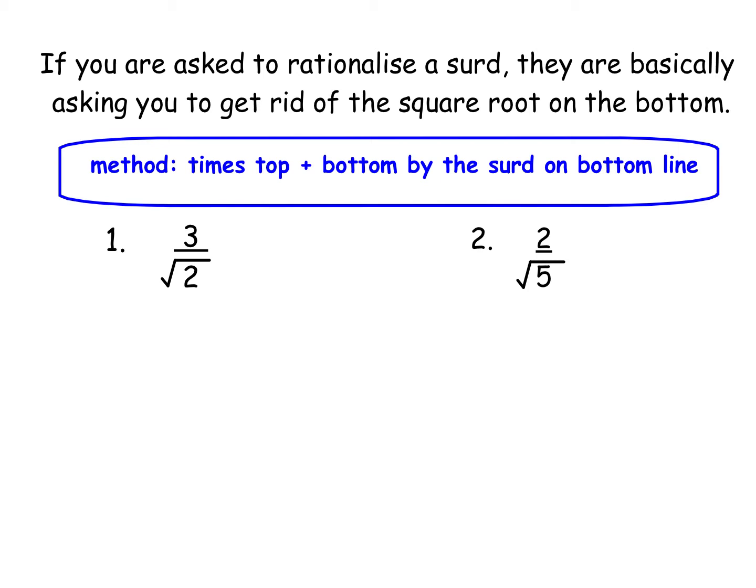Okay now the method to do this is really simple if you remember it. We times the top and bottom by whatever the surd is that's already there because if you multiply top and bottom by the same thing you still have an equivalent fraction.